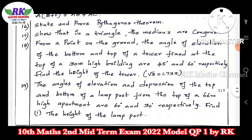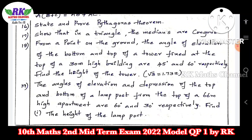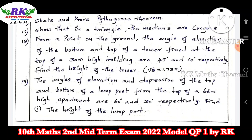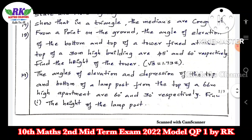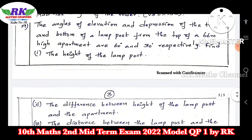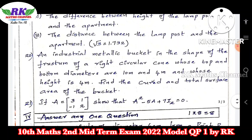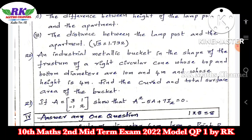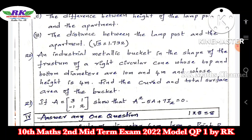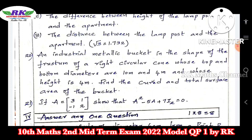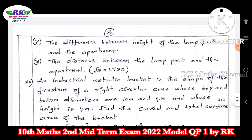Question number 18: heights and distance problem. Question number 19: one angle of depression problem. Question number 20: mensuration — curved surface area and total surface area of a cone. Question number 21 is the compulsory question: given matrix A, show that A² − 5A + 7I = 0.